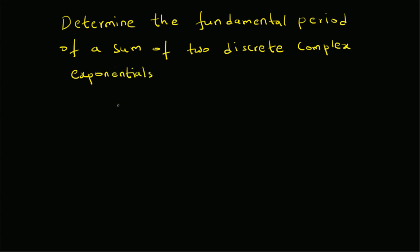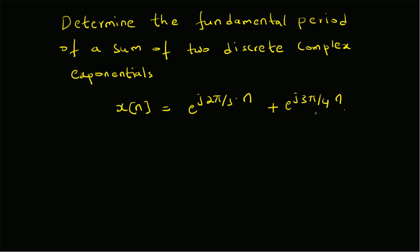Given the signal x[n] defined as the sum e^(j·2π/3·n) plus e^(j·3π/4·n), we can clearly see that both components are present.